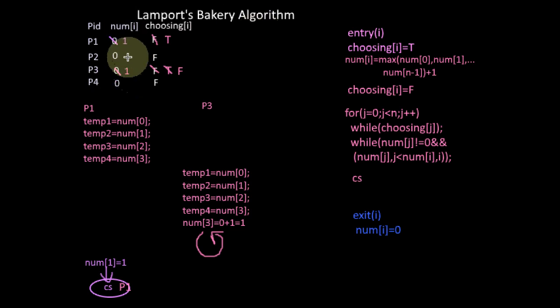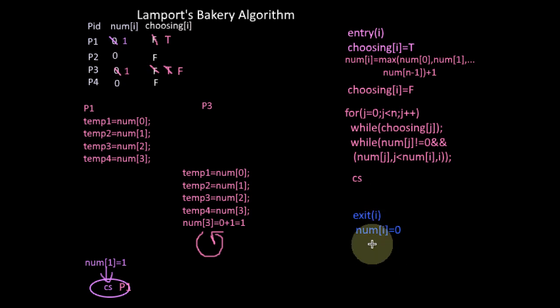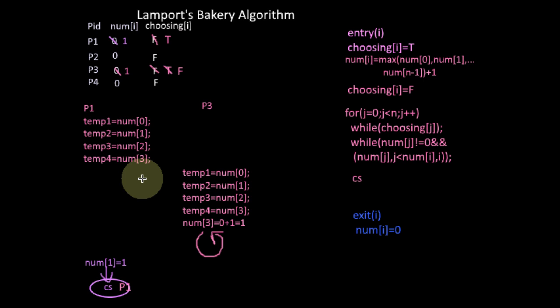If a process is in the remainder section, its number will be set to zero. Thus only processes whose numbers are not equal to zero participate in the decision of whether a process should be allowed to enter the critical section. Based on priority or first-come-first-served basis, every process will be served. Hence the progress and bounded waiting conditions are also satisfied by the Bakery Algorithm.